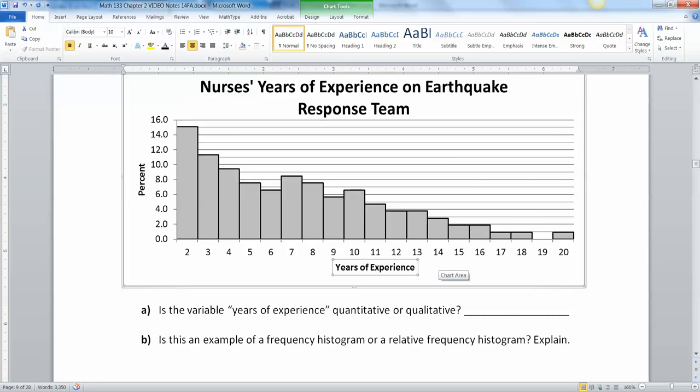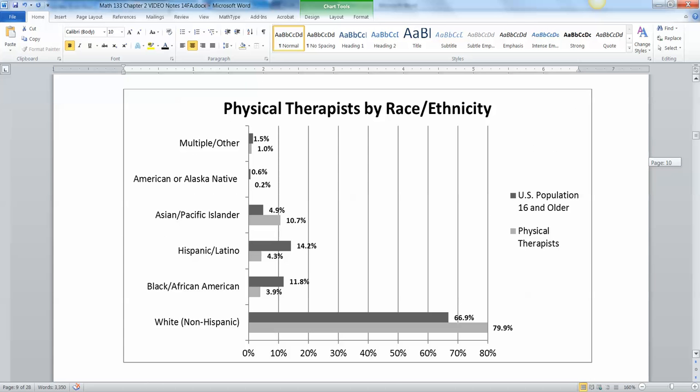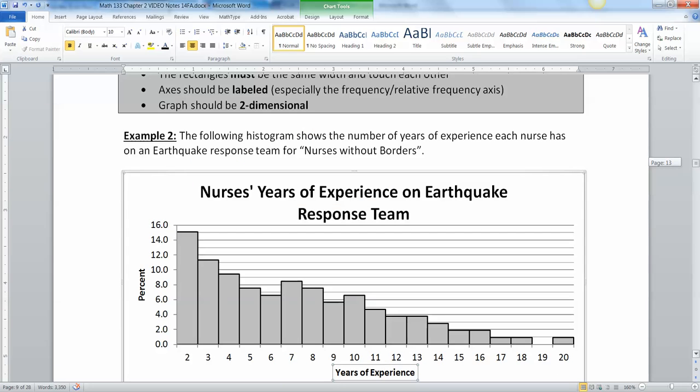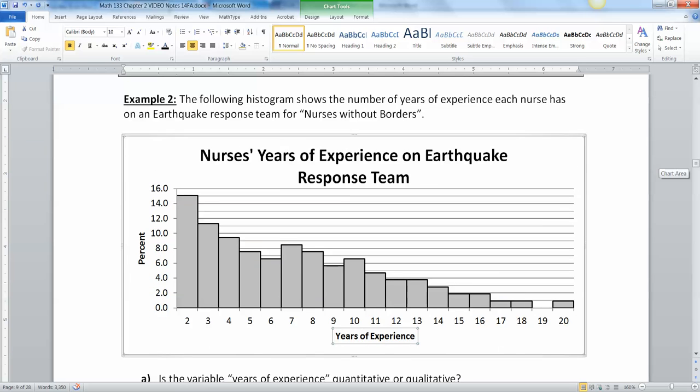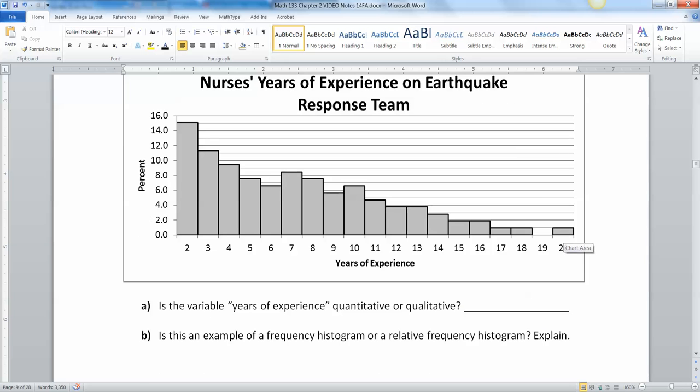Generally, we don't draw histograms horizontally. We can draw bar charts horizontally, like we did with the Medicare expenses one. Physical therapist, that's a bar chart, it's horizontal. But in general, histograms, we don't draw horizontally very much. We tend to draw them vertically. So this is the number of years of experience each nurse has on an earthquake response team for nurses without borders. So they have a nursing team. And here are the years of experience. You can see 15% of the nurses only have two years of experience and so on. 1% have 20 years of experience.